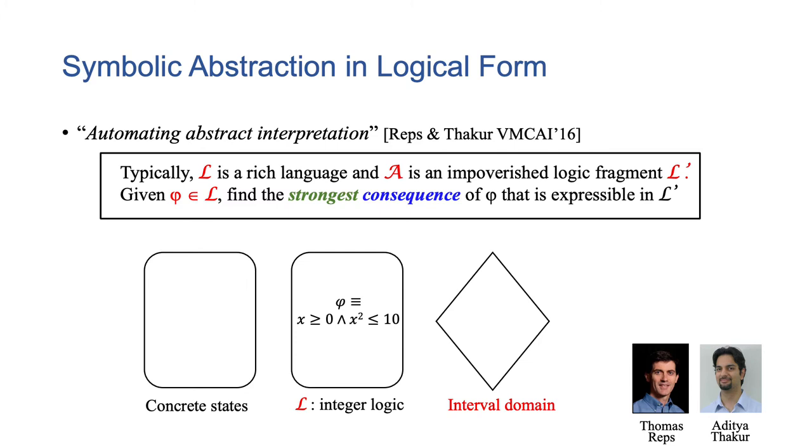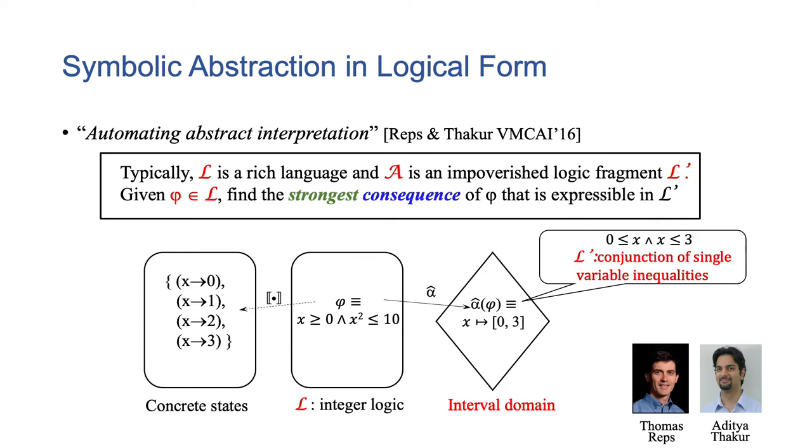Actually, symbolic abstraction can be regarded as a fundamental logical approximation problem. Specifically, we can regard an abstract domain as a logical fragment that has some syntactical restrictions, such as the interval domain. Given a formula in a rich logic and a logical fragment, symbolic abstraction aims to compute the strongest consequence of the formula in the fragment. For example, consider a simple non-linear inequality. It has four models. Its best abstraction in the interval domain is x in 0 to 3. Actually, the interval domain can be regarded as a logical fragment about conjunction of single variable inequalities.